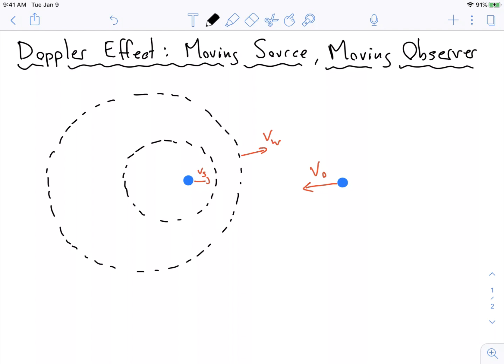So what are the things to think about? The first thing to think about is the frequency that this source is emitting. So it's emitting some frequency f. Where does the Doppler effect come from for the moving source?